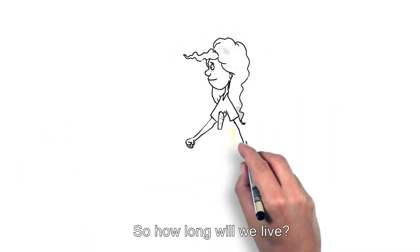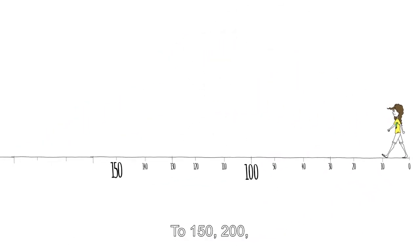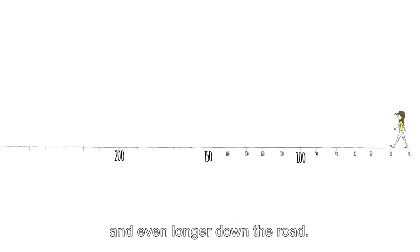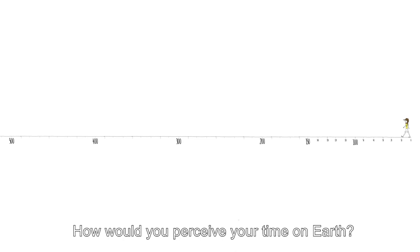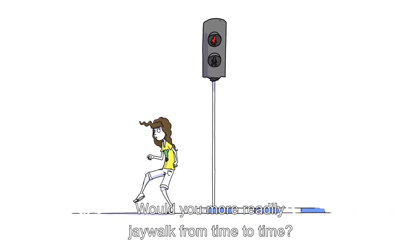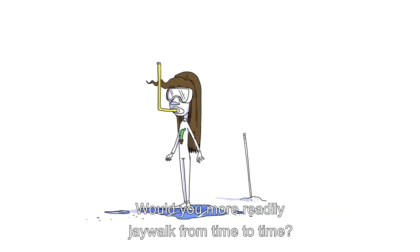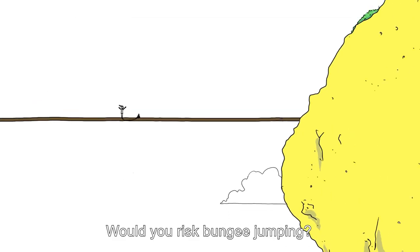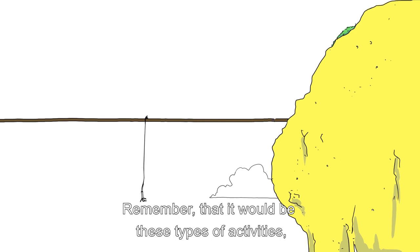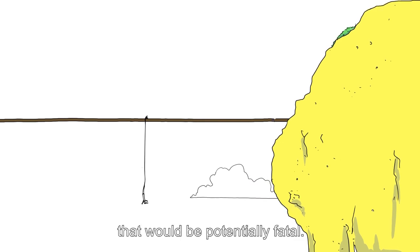So how long will we live? To 150, 200 and even longer down the road. Imagine if you knew that you would live to be 500 years old. How would you perceive your time on earth? Would you more readily jaywalk from time to time? Would you still travel to the not-so-safe Sinai Desert? Would you risk bungee jumping? Remember that it would be these types of activities, rather than illness, that would be potentially fatal.